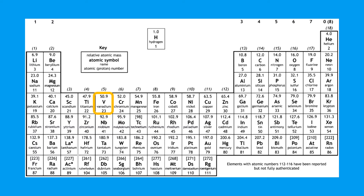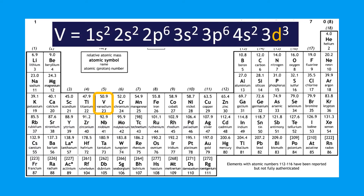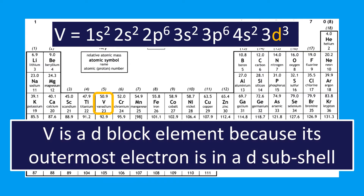Let's have a look at vanadium — vanadium is an example of a d block element. Its electron configuration is 1s² 2s² 2p⁶ 3s² 3p⁶ 4s² 3d³. It's a d block element because its outermost electron is in a d subshell. So that's how we classify elements as s block, p block, or d block — it all depends on where the outermost electron is found.